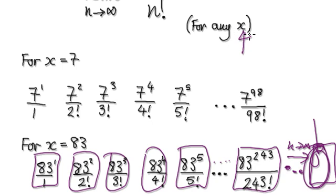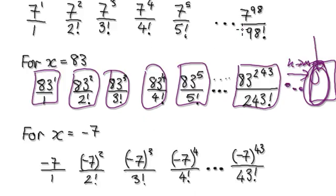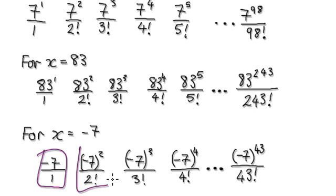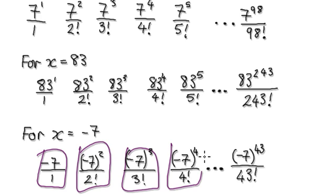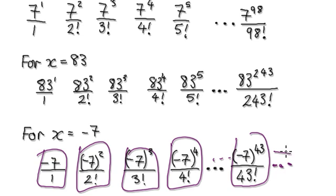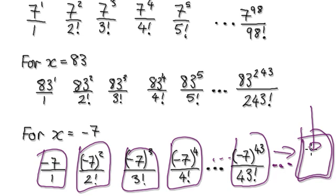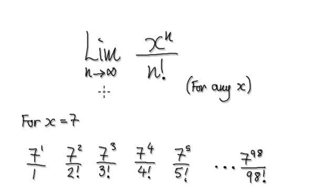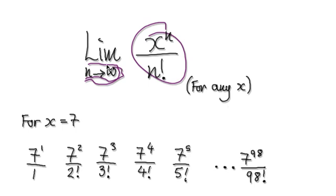Well, remember, for any given value of x — x could be a negative number. So here it's negative 7. So the first term would be this. Second term would be this. Third, fourth, and even further than this — as n tends to infinity, what would be the value of this fraction here? So that's what is meant by finding out the limit of this as n tends to infinity.